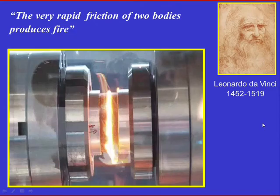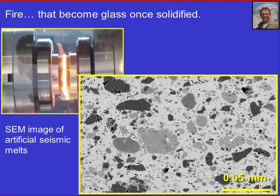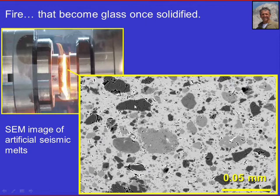There is nothing new in the observation that rapid friction of two bodies produces fire — Leonardo da Vinci noted this. But today you can make much better movies. More importantly, you can collect the sample and examine the solidified glass — quartz clasts, feldspar clasts, all in a gray glassy matrix. You can use a high-speed infrared camera — one frame per millisecond, with bright regions indicating temperatures above 500°C — to investigate the full process in detail. You can see debris projected away and observe the formation and evolution of the melt layer.